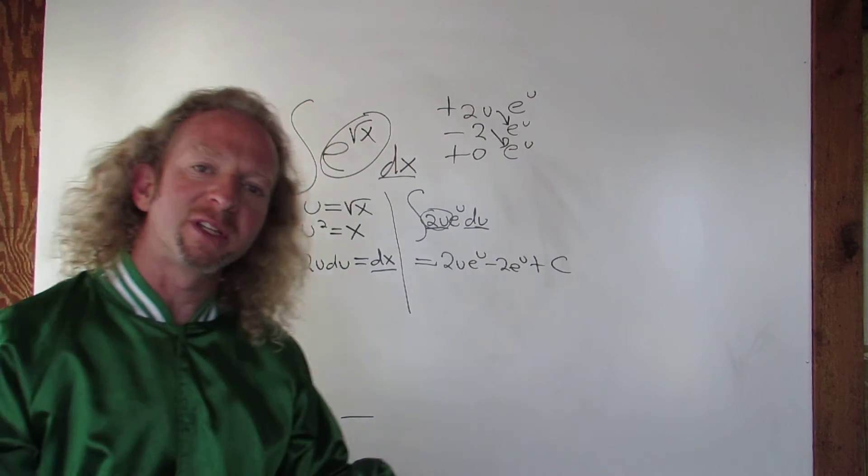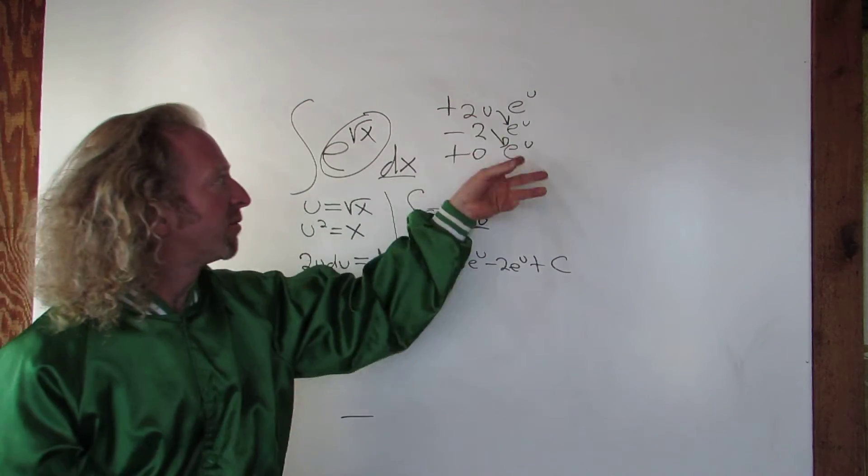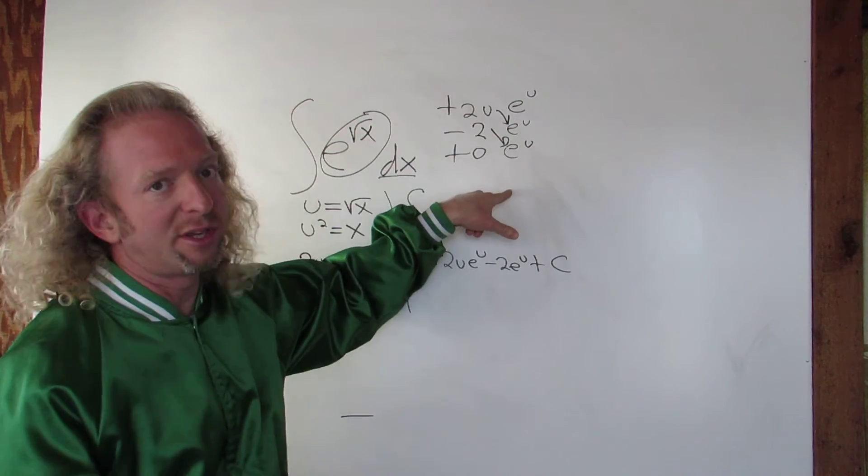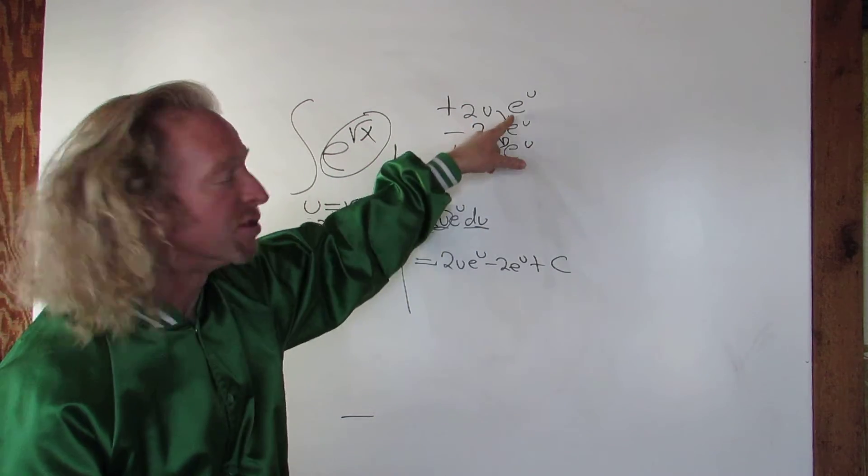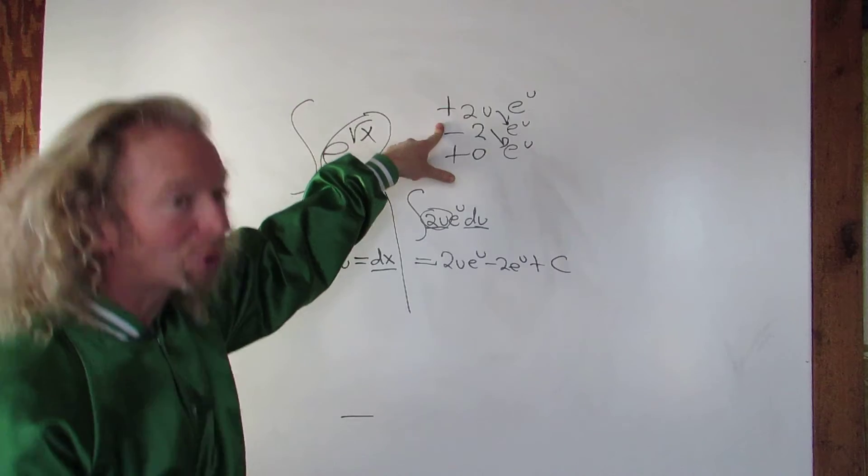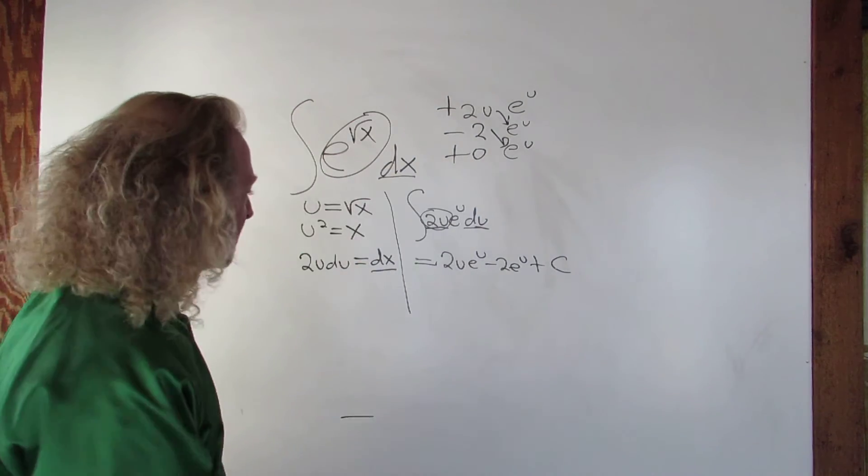So again with tabular, you pick the piece that after repeated differentiation is eventually 0 and then you integrate the other piece. You just keep differentiating and you just keep integrating. Always start with the plus, so plus minus plus. Follow the arrows, boom, there it is.